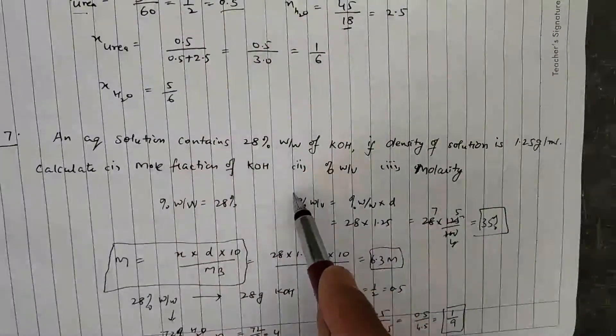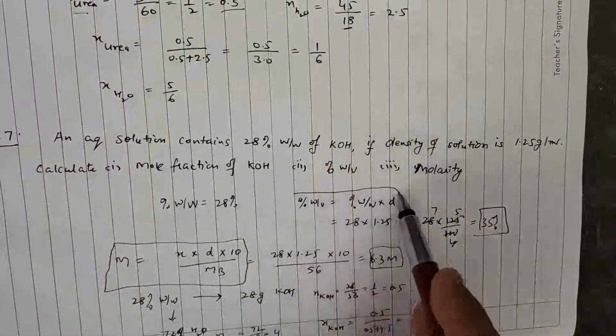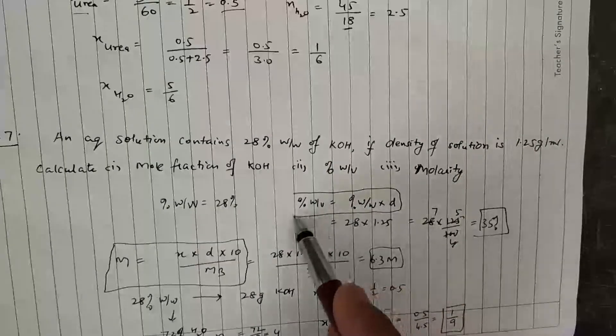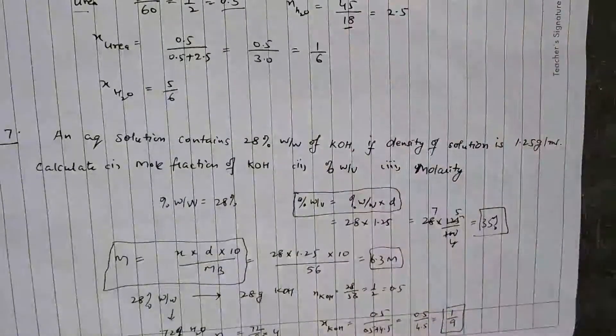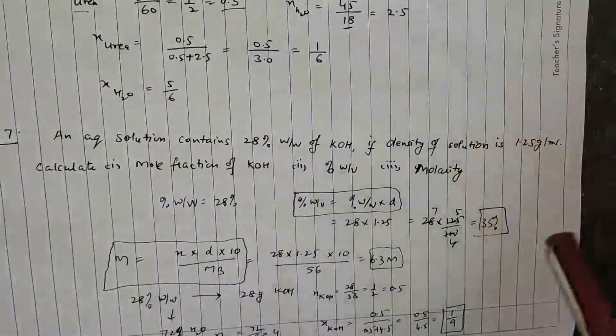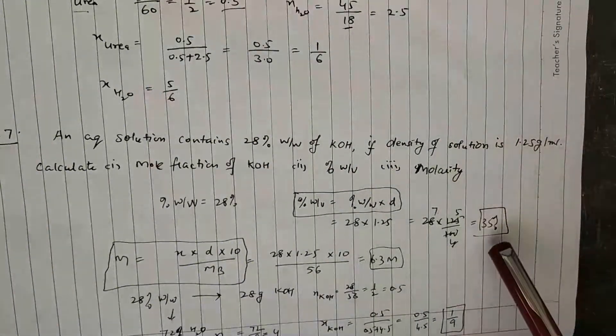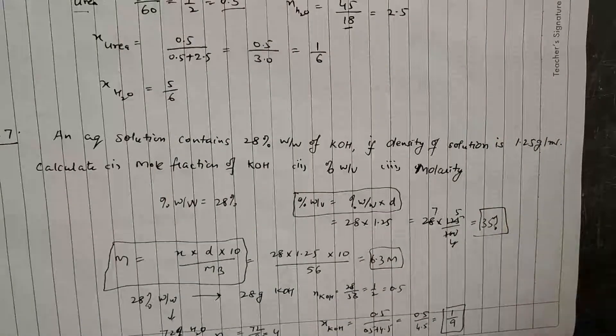Percent weight by volume can be calculated using the relation: percent w/v = percent w/w × density = 28 × 1.25 = 35 percent.